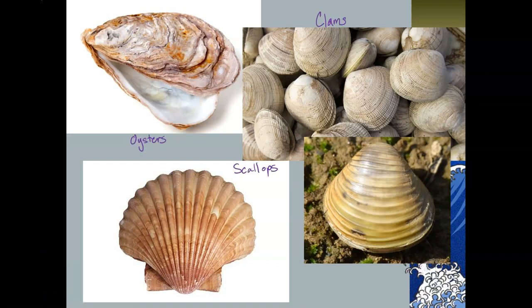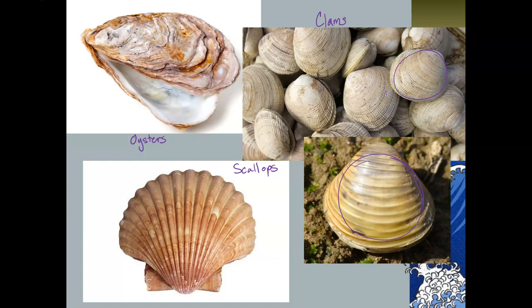Did you draw some outlines that look like the animals on the screen? Hopefully you drew something that looks like a clam up here — these are clams, and this is a clam here as well. And then we have a picture of an oyster and a picture of a scallop.